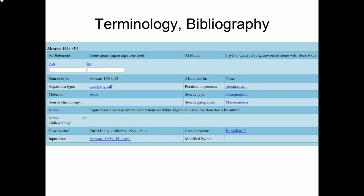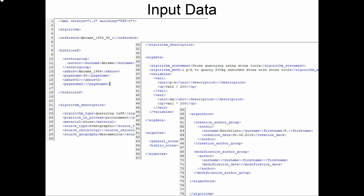The HTML pages give links to explain the terminology and bibliographical information. We have the algorithm type — which in this one example is stone quarrying — leading to a static HTML page discussing tough quarrying. Then the position in the process, whether it's procurement of materials or the building instruction itself, the source type — whether ethnographic, textual, or experimental archaeology — the area, the bibliographical information, as well as the raw input data, which is a standard XML input file.